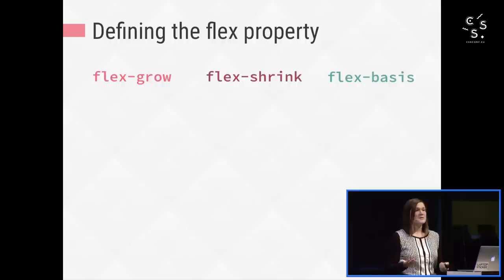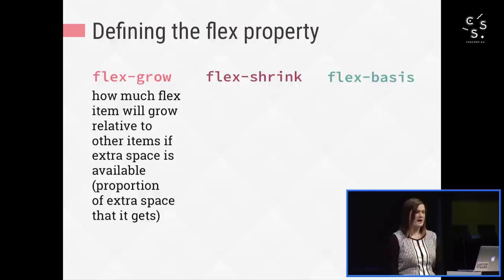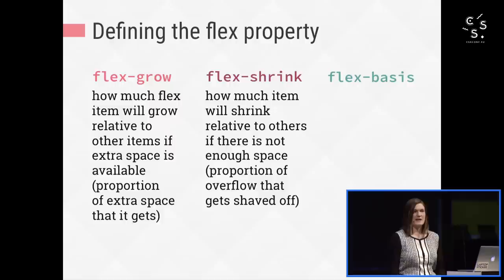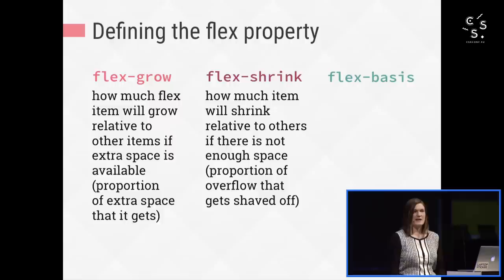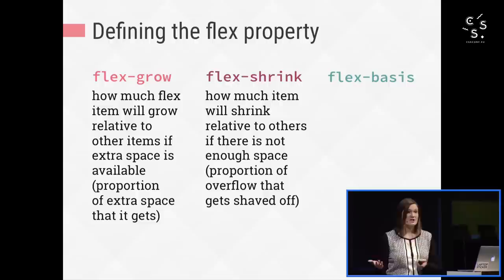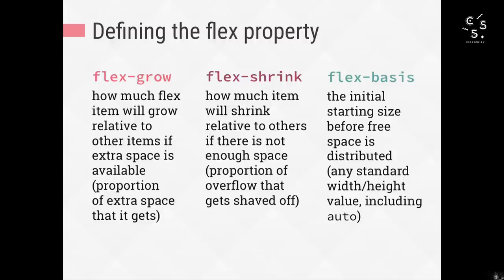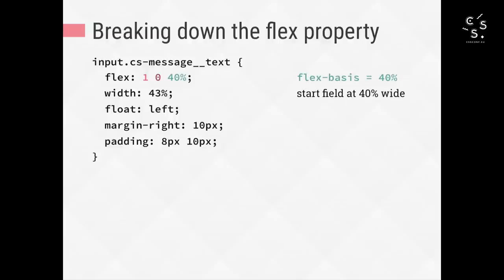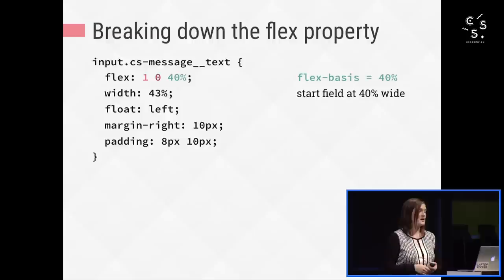There are up to three components to a flex value, as it's a shorthand property. Flex-grow means how much the flex item will grow relative to other items if there's extra space available. Flex-shrink means how much the item will shrink relative to others if there's not enough space. Both flex-grow and flex-shrink are set to unitless integers like 0, 1, or 2, since they specify a proportion — it's like the number of shares of extra space that they get. Flex-basis is the initial starting dimension before free space is added or taken away, and it's set to any standard width or height value, including auto, which sizes the item according to its content. On the Booking.com customer service form, flex-basis is set to 40%.